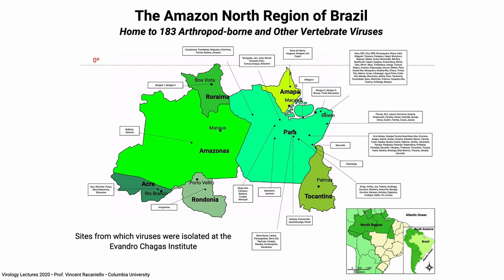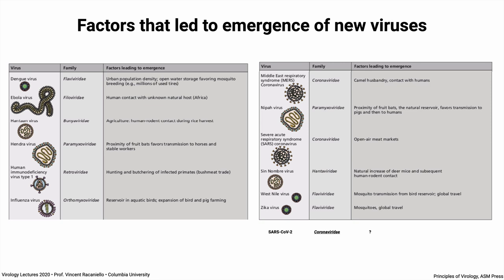There is a huge diversity of viruses living in wildlife in parts of the world. The Amazon North region is being deforested, so people are going in to work, getting these viruses, and bringing them back to cities and towns. The more we encroach upon infected animals, the more we're going to acquire their infections. Conditions like those favoring mosquito breeding — tires and population growth — drive emergence of viruses like dengue.